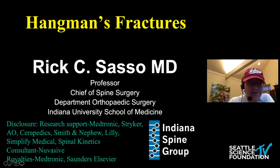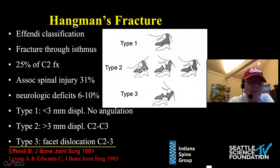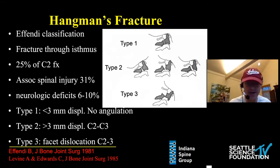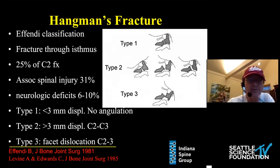Hangman's fracture is a fracture through the pars interarticularis of C2. It comprises about 25% of all C2 fractures, only behind odontoid fractures in regards to incidence and frequency. Like odontoid fractures, it's associated with other fractures, most commonly C1, but also other non-contiguous spine fractures are common, occurring in about 30% of patients.